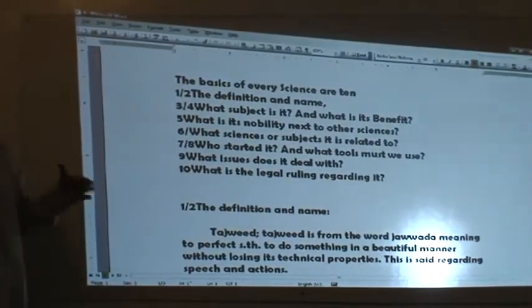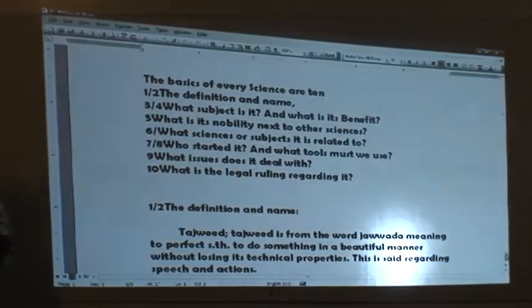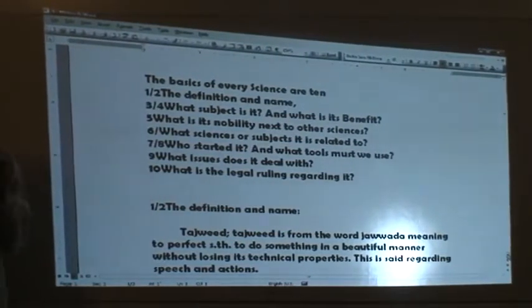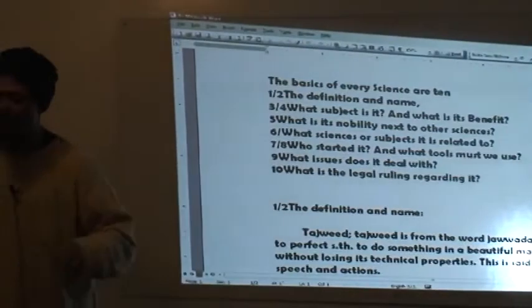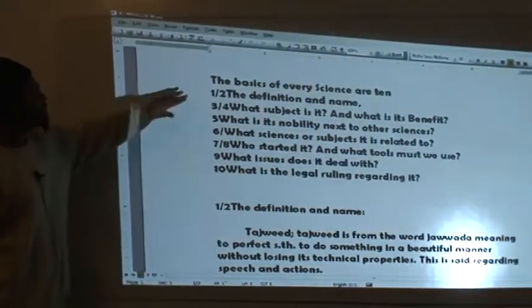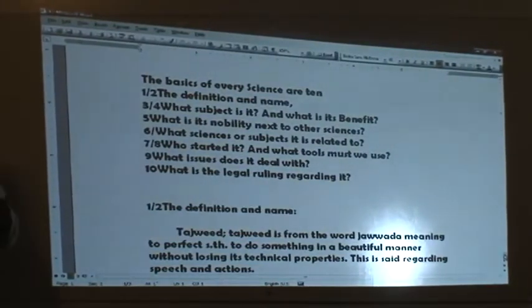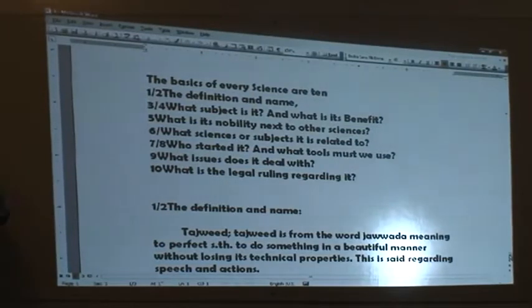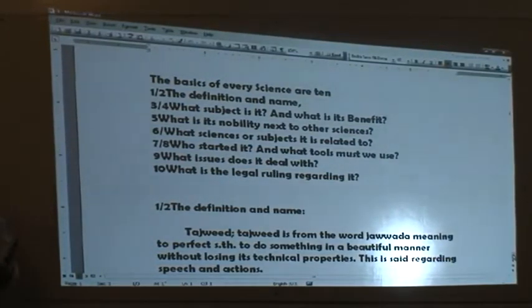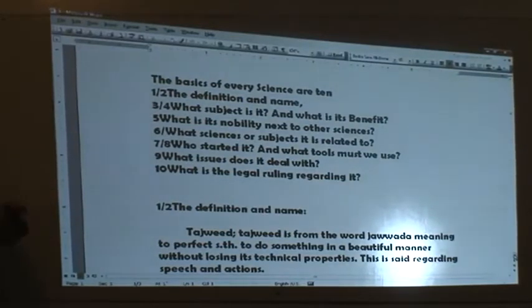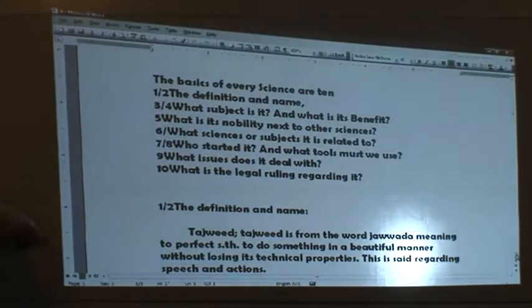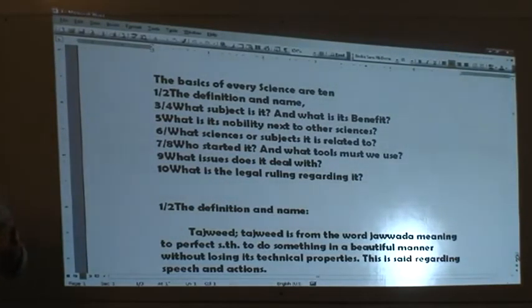It says the basics of every science are ten. That means there are ten fundamental things, basic things that everybody must know before you start studying this subject. They're simple, common sense things. The first and second is the definition and name of the subject. Third and fourth are what is the subject matter and what is the benefit. Fifth is its nobility next to other sciences. Sixth, what sciences is it related to? Who started it and what tools must we use? Because in every science that you deal with, you have your hammer and your nail. These are tools that you use in building.